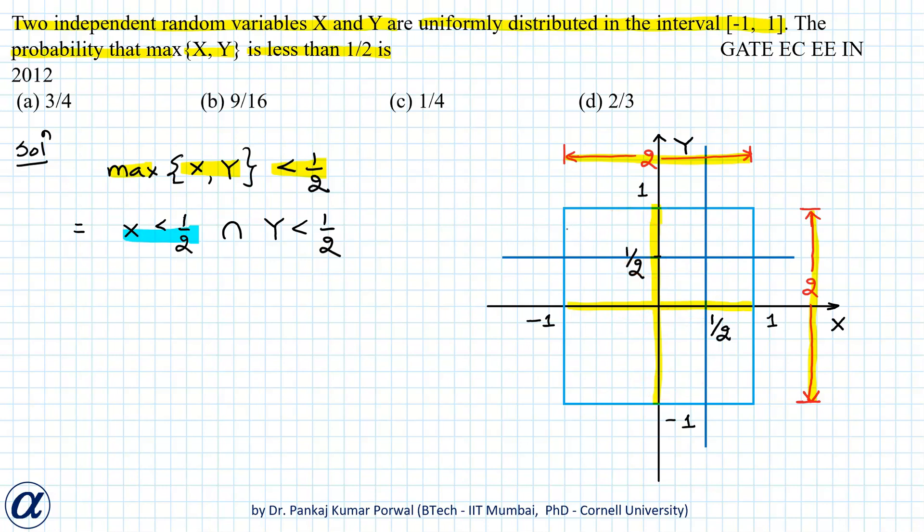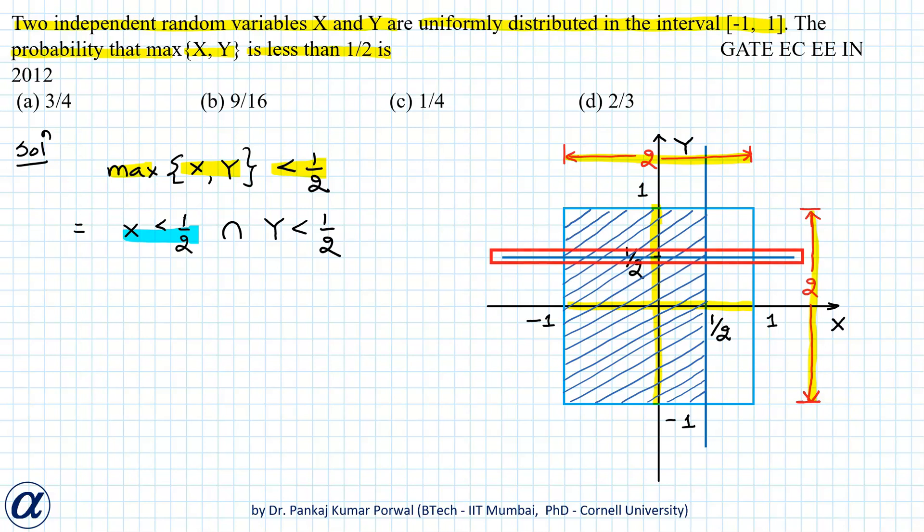Similarly, Y equals 1/2 on this line, so Y will be less than 1/2 in the region below this line. The event Y < 1/2 will correspond to the area in the square denoted by green shading.